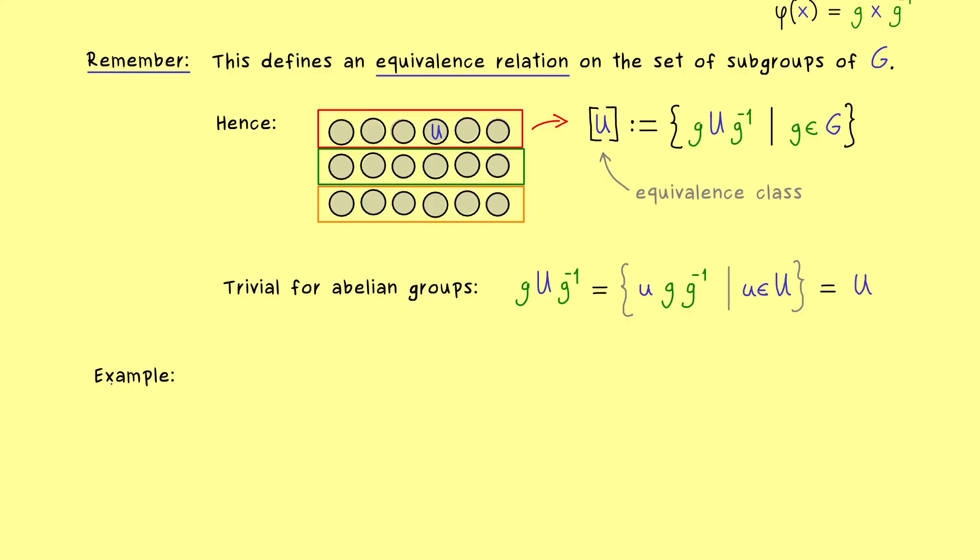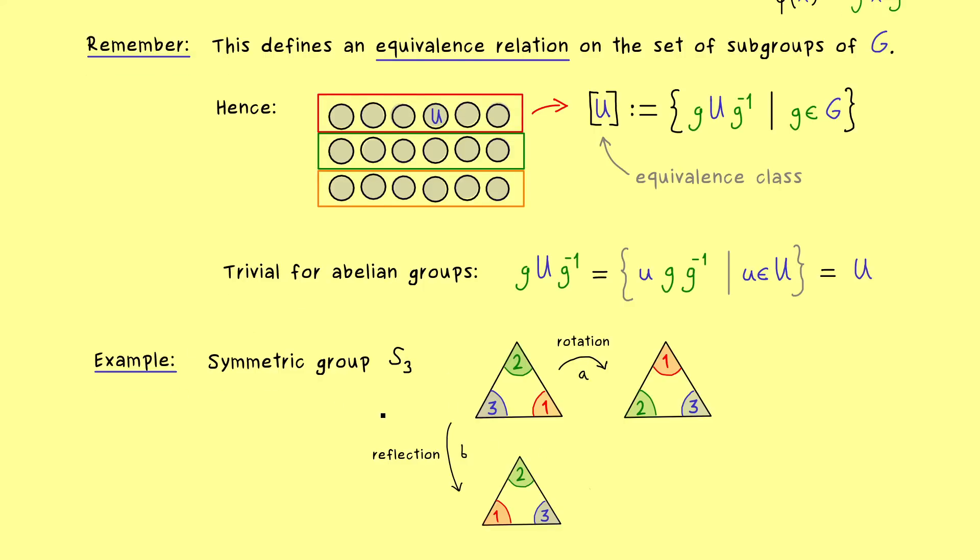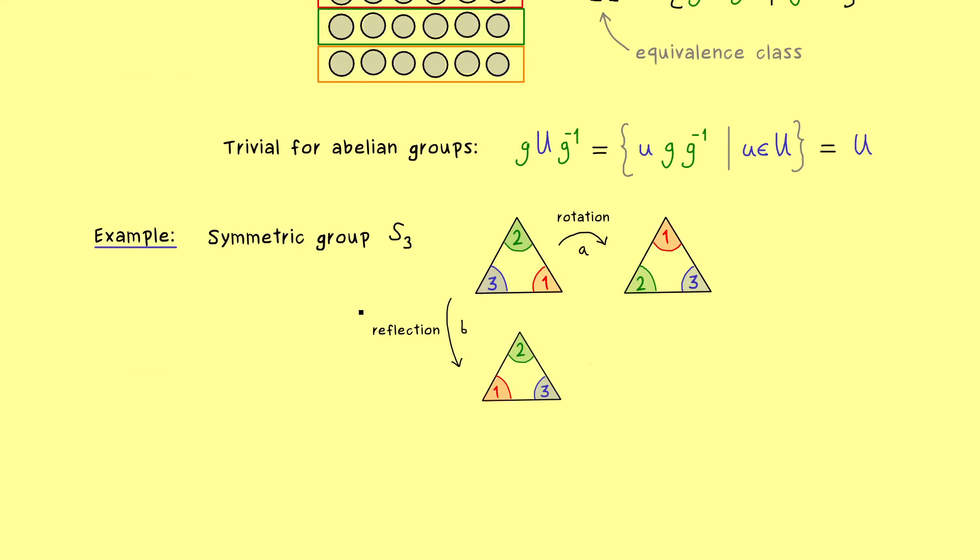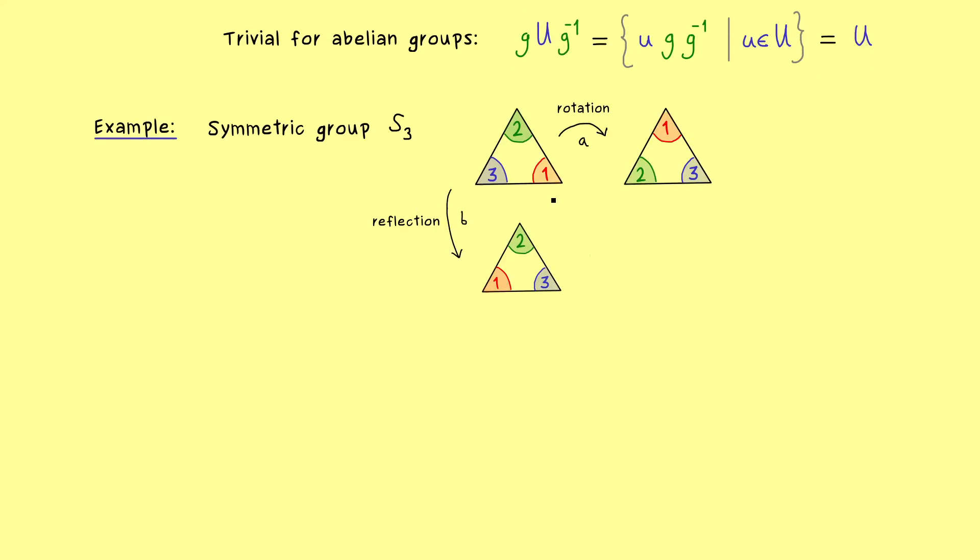Therefore if we want to discuss an example we should take one which is not commutative. This means the order should be not too small and we already know one example namely the symmetric group S3. So please recall part 7 where we have discussed the whole thing. And where we have also explained that we can see it as a permutation group on three elements.